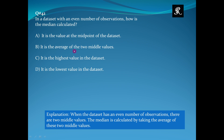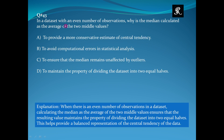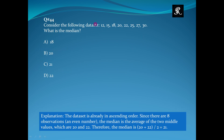In a data set with an even number of observations, why is the median calculated as the average of the two middle values? To provide a more conservative estimate of central tendency. To avoid computational errors in statistical analysis. To ensure that the median remains unaffected by outliers. To maintain the property of dividing the data set into two equal halves. The right option is option D.